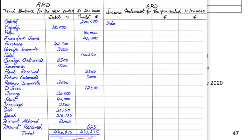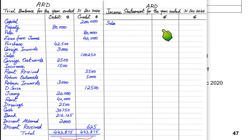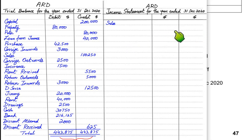Let us discuss the underlying concepts and the format we use. One thing you must understand is that a trial balance has two sides — debit and credit. Although an income statement may also appear to have two sides, the two columns in an income statement are not called debit or credit. They are just for illustration and presentation purposes.